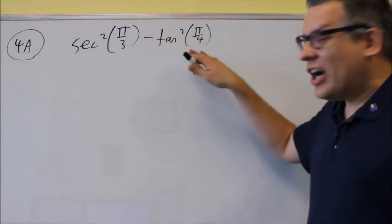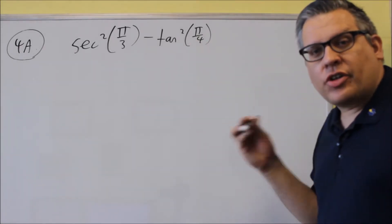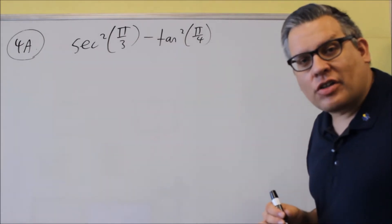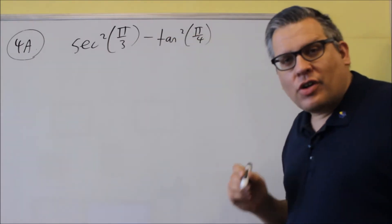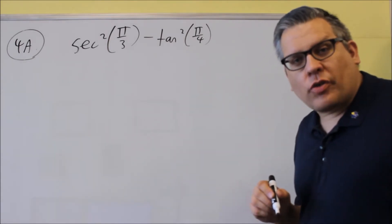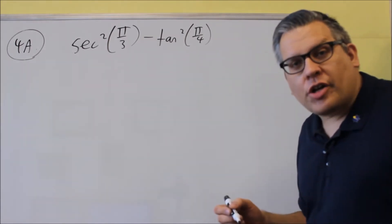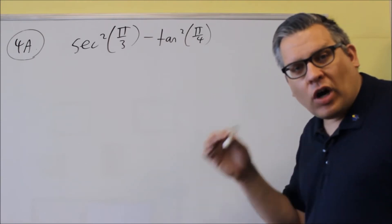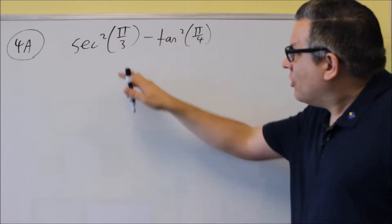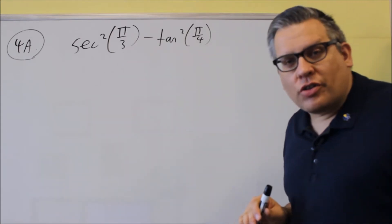4A asks you to find the exact value. Now whenever you see exact value on the test, that means that you want to write the answer in terms of square roots or fractions, whatever it happens to be. You do not want to write your answer as a decimal. So don't do that. If it says exact value, I want the square root and the fraction with it. So that's what we'll do on this one.